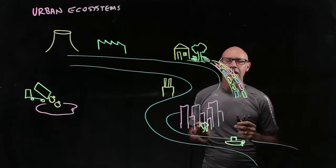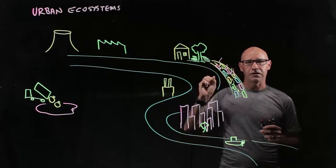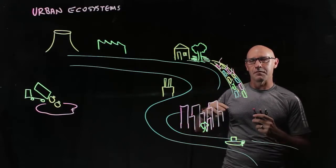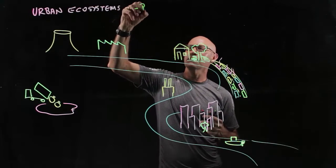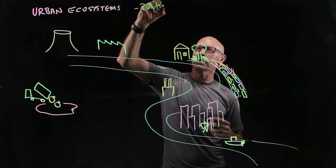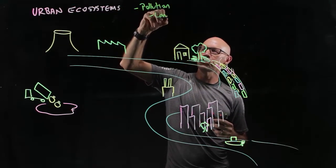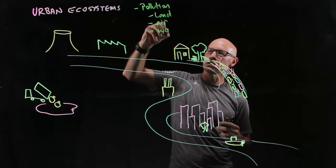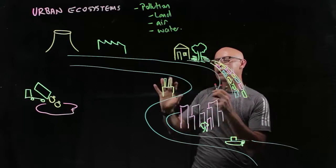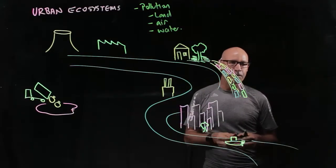One of the things that we can say about urban ecosystems is that humans pollute it in three different areas. So we have different types of pollution. We can have a look at land pollution, air pollution, and then water pollution as well. So I'm going to have a look at each of those in this video.